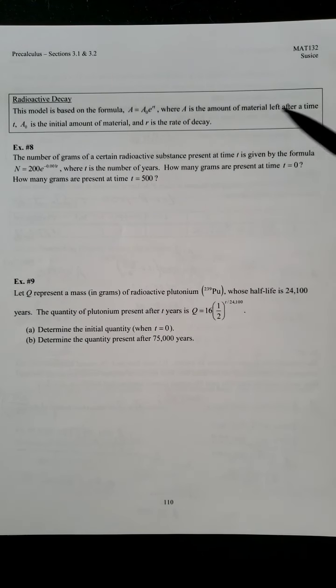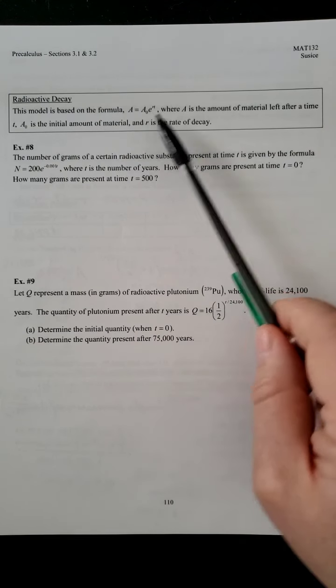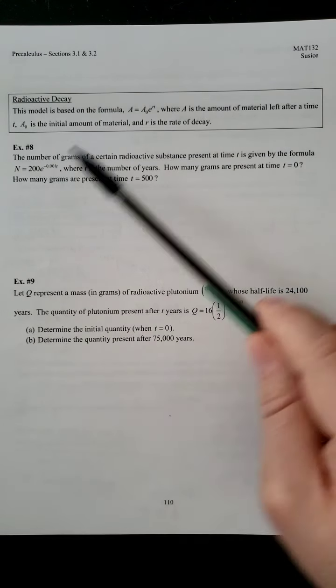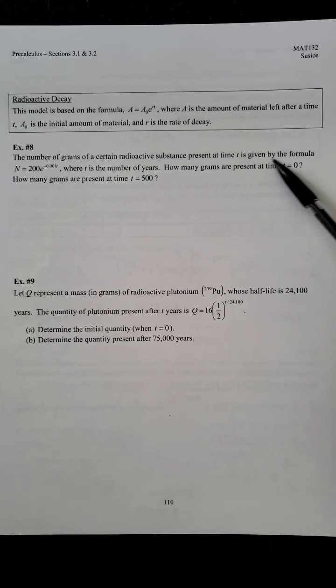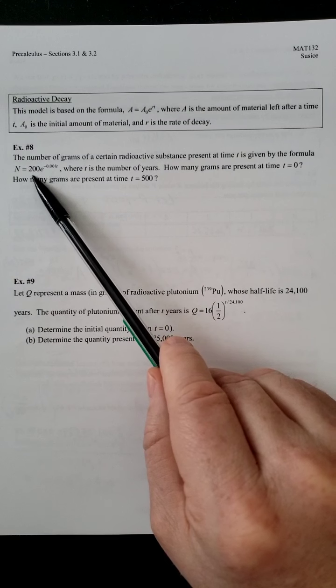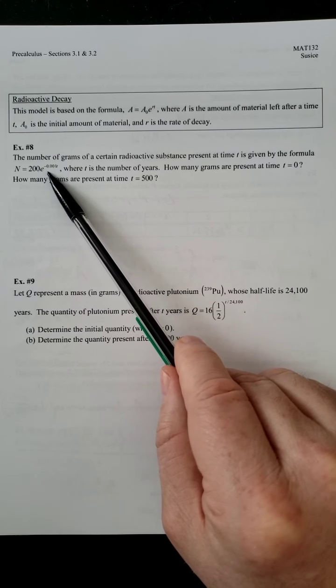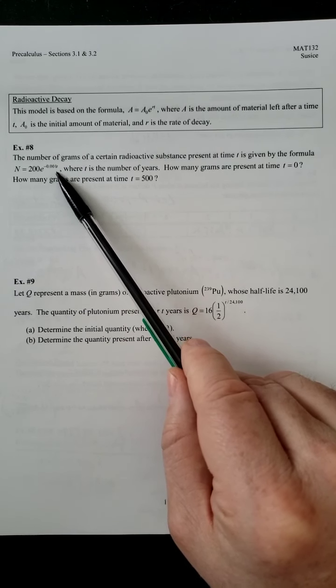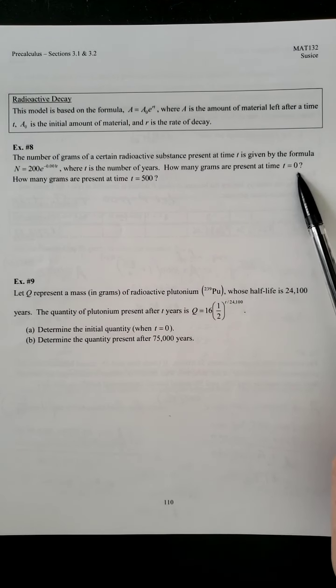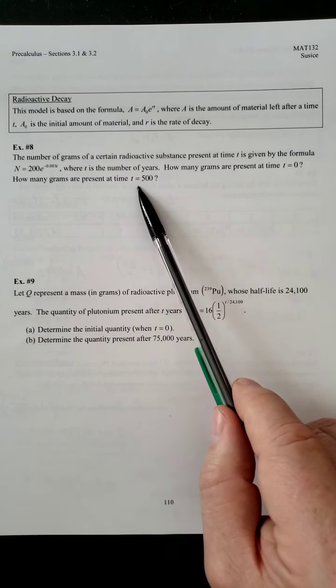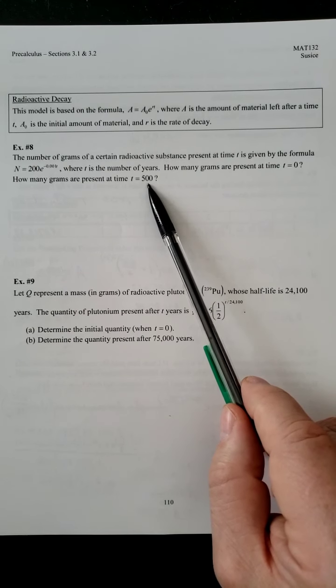We're going to see a common thread with these types of problems as far as what their function looks like. So, we have the number of grams of a certain radioactive substance present at time T is given by the formula N equals 200 E to the negative 0.001T, where T is the number of years. How many grams are present at time T equals zero, and how many grams are present at time T equals 500?